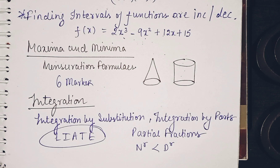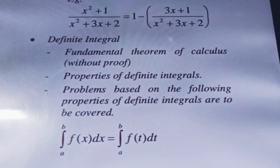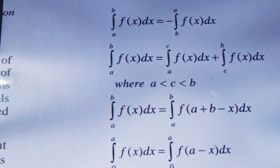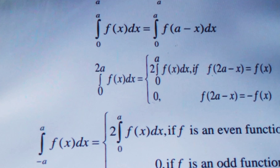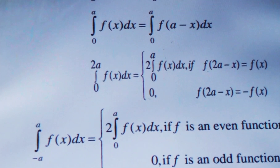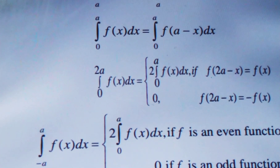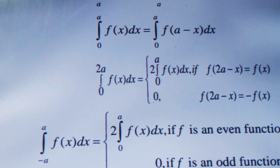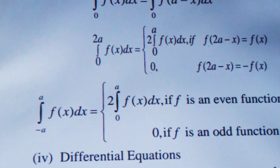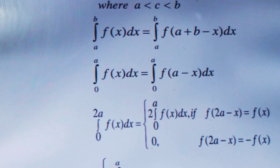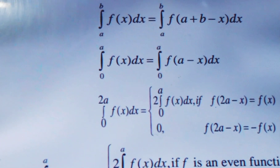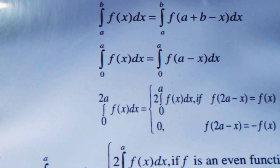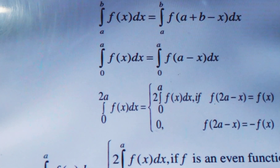For partial fractions, the degree of the numerator must be less than the denominator before you proceed. For definite integrals, all properties must be covered. An important condition is: ∫₀²ᵃ f(x)dx = 2∫₀ᵃ f(x)dx when f(2a−x) = f(x), and equals zero when f(2a−x) = −f(x). Another widely used formula is ∫₀ᵃ f(x)dx = ∫₀ᵃ f(a−x)dx. Practice questions from your book based on this formula.